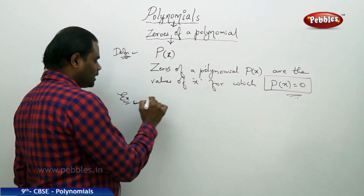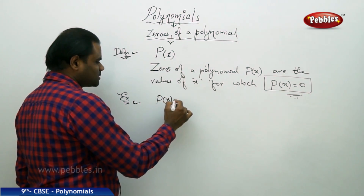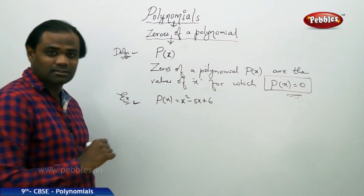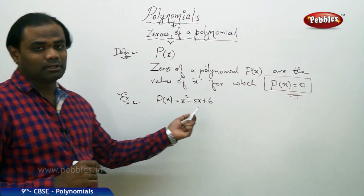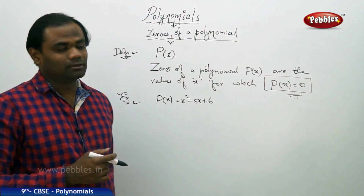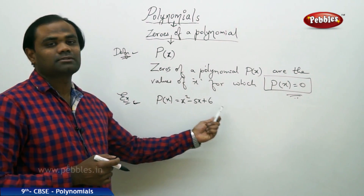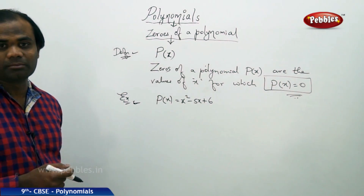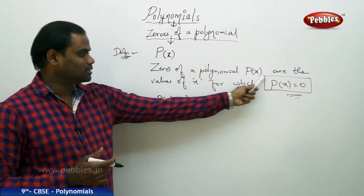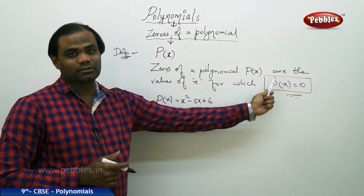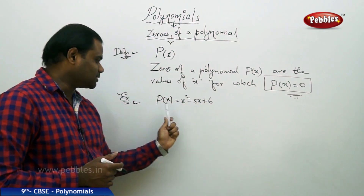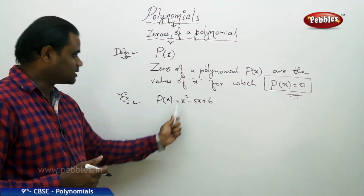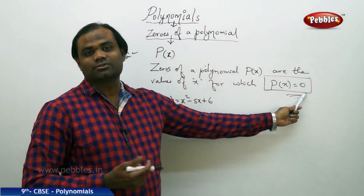For example, the polynomial p of x is x squared minus 5x plus 6, which is a quadratic polynomial or trinomial. To find the zeros of this polynomial, I apply the definition: I take the equation x squared minus 5x plus 6 equal to zero and solve.